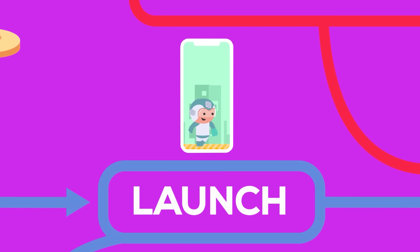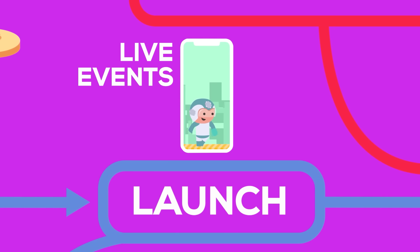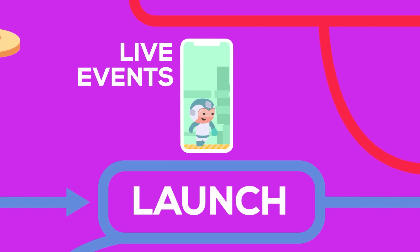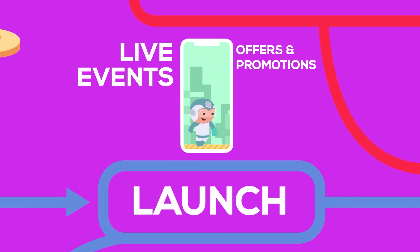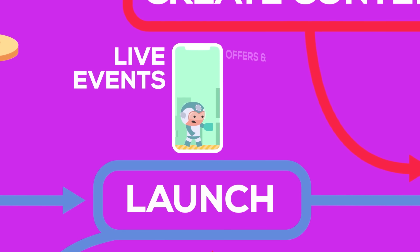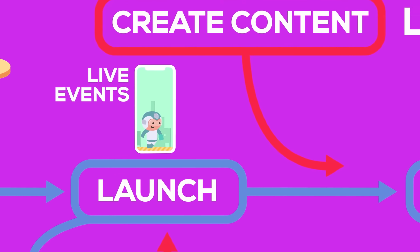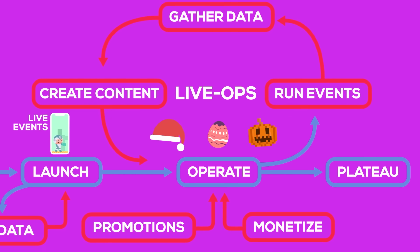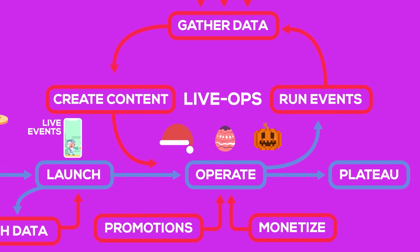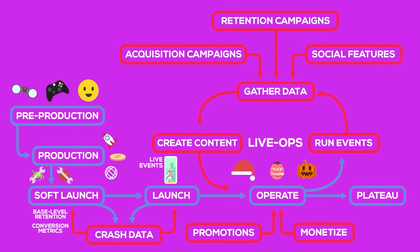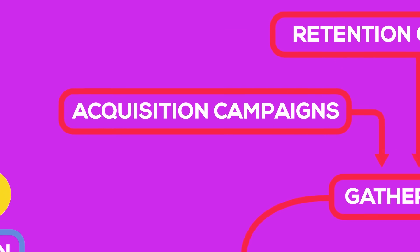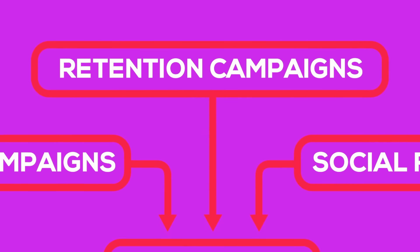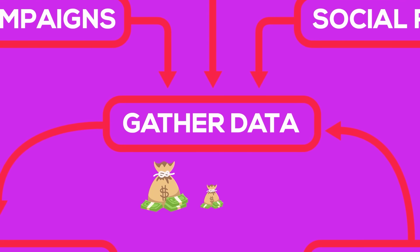Once in full launch, most freemium mobile games drive monetization through live events — scheduled periods where special gameplay or rewards are offered to users for a limited timeframe. Offers and promotions to boost monetization or re-engage players are commonplace during these periods. It is popular for developers to focus live events on major holidays or themes like Christmas, Easter, or Halloween. Live events are typically the primary point of monetization for mobile games, so they are a huge part of the release strategy, often coinciding with user acquisition campaigns, introduction of new features or content, and providing great user data that can inform user acquisition budgets.